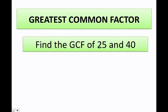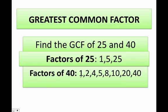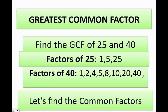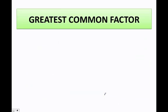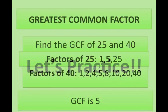Find the greatest common factor of 25 and 40. The only factors of 25 are going to be 1, 5, and 25. The factors of 40 are going to be 1, 2, 4, 5, 8, 10, 20, and 40. The only common factor they have is 5, therefore the greatest common factor is 5.